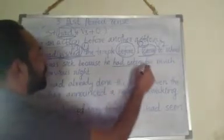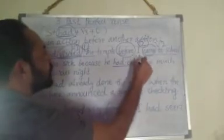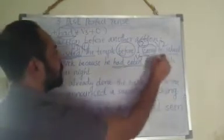Next example: 'He was sick because he had eaten too much the previous night.' Which is the past perfect tense? Yes — 'had eaten': had plus V3 form. 'Was sick' is V2 form, so that is simple past tense. The eating action is the first action that happened first; after that, the simple past action — being sick — happened. That is the second action.